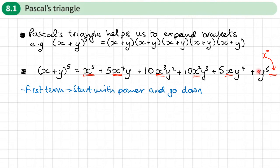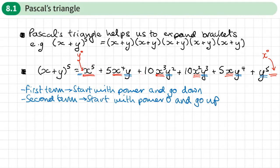How about the other term, the y? Well, that does the opposite. There's no y at the beginning, so it's the same as y to the power 0. Then it goes y to the power 0, y to the power 1, y squared, y cubed, y to the power 4, y to the power 5. With the second term, it starts at 0 and goes up in powers. It's interesting to note that in every term, the sum of the powers is 5, the same as the original power.